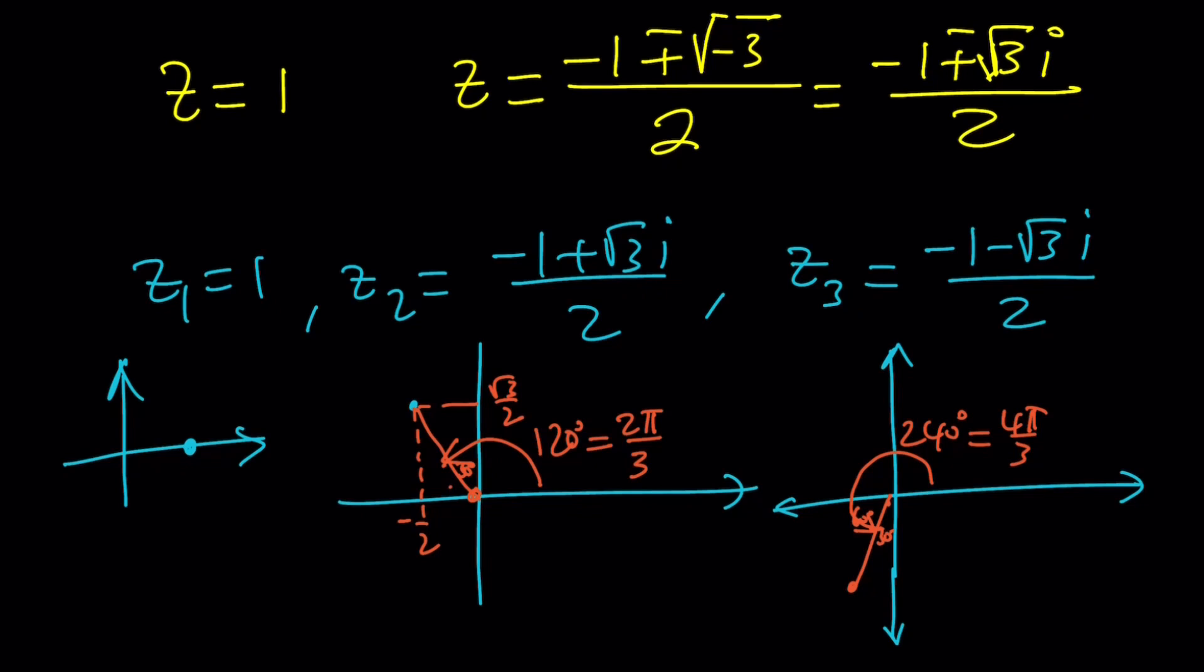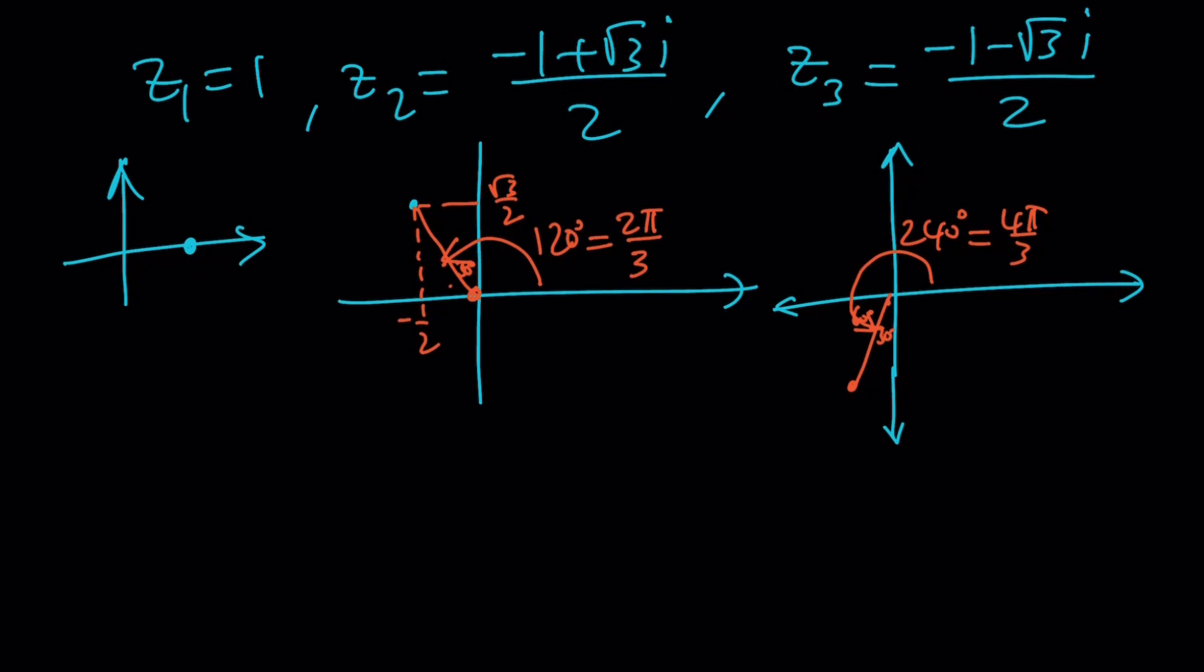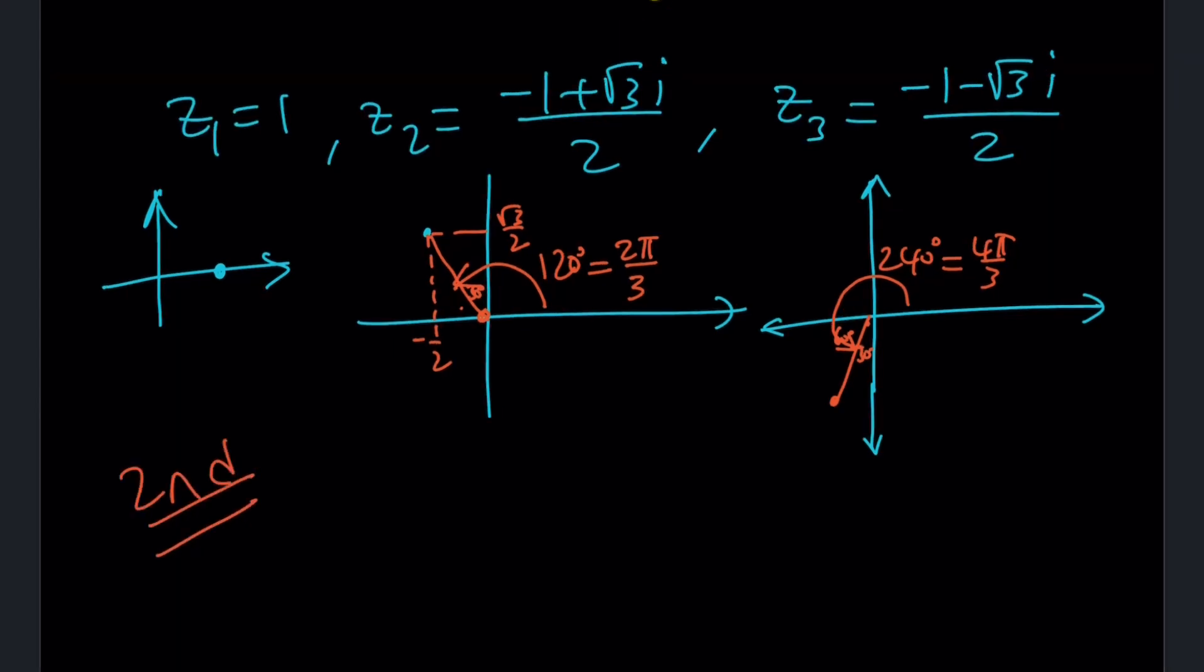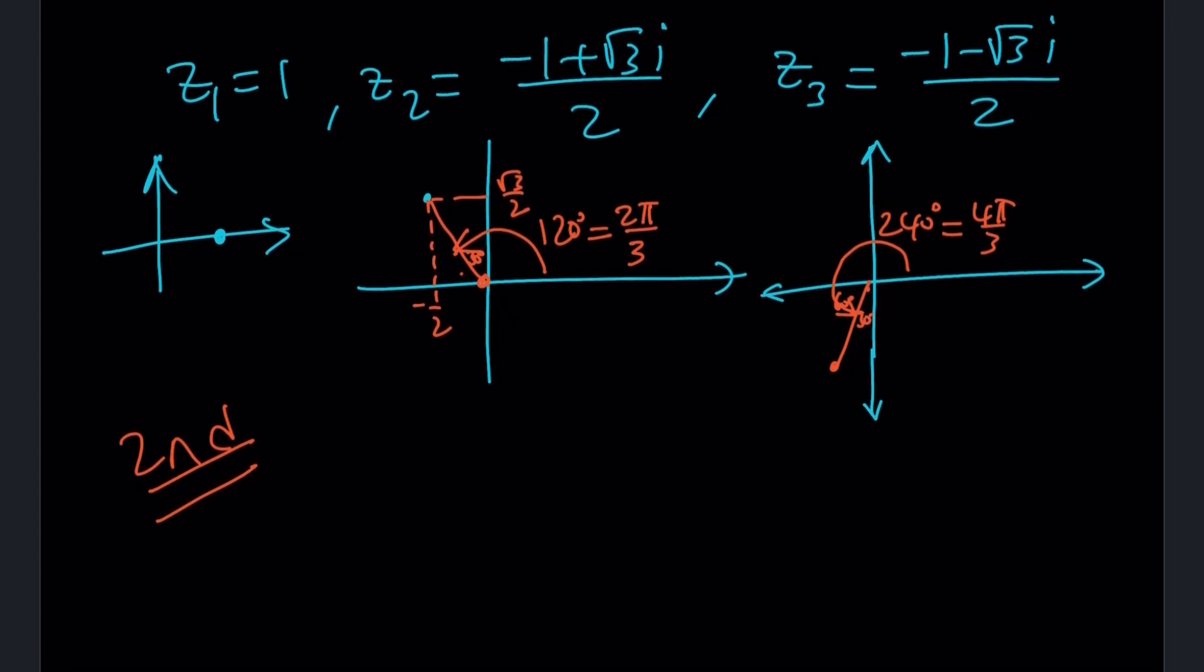Radians are more common. So those are my numbers. Obviously, I can express them in polar form. But let's go ahead and do the second method, because the second method is going to give those results directly. So for the second method, we will use the idea of cube roots of a complex number.